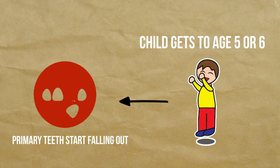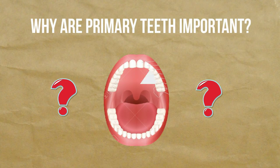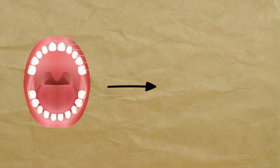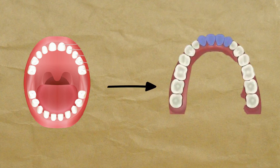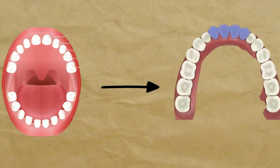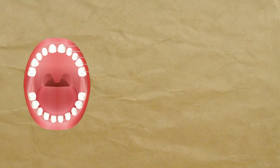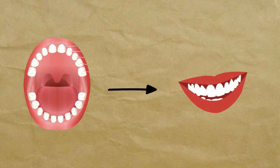When the child gets to age five or six, primary teeth start falling out one by one — and the tooth fairy time begins! Primary teeth are important because they hold the place for permanent teeth and help guide them into the correct position. Primary teeth also play an important role in the development of speech and chewing.